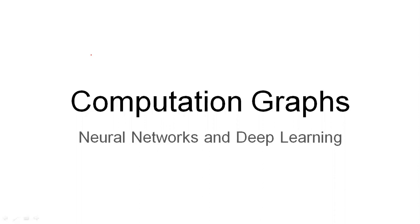In this video lecture we are going to understand a topic named computation graphs. In neural networks, computation graphs are used to find the derivative — this is a new concept studied only in neural networks and deep learning. A computation graph is made up of two types of propagations: forward propagation, used to find the output, and backward propagation, used to find the derivative. These two things have to be kept in mind while working with computation graphs.